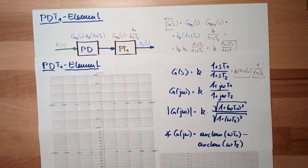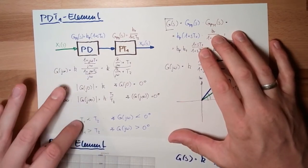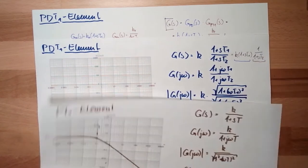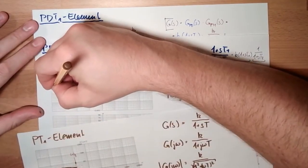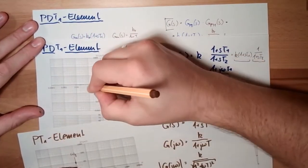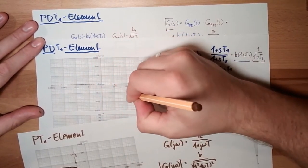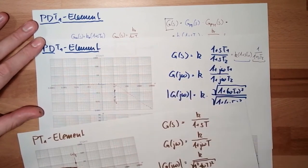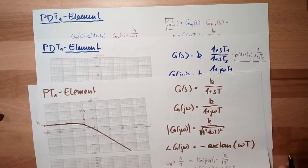Let's assume T1 is smaller than T2. Looking at the PT1 element in the Bode plot: it started at zero and goes up, let's say at 10. The bend is at 1/T2 — this is the frequency ω_g = 1/T2.